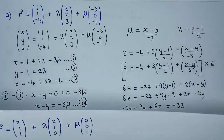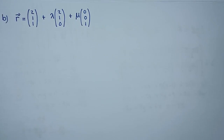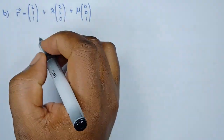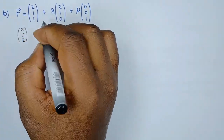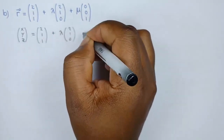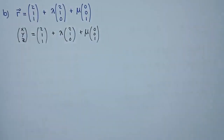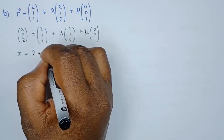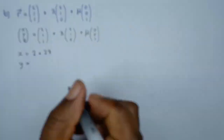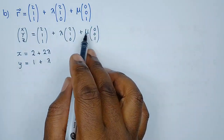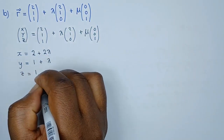For the second question, R can be written as the column vector XYZ, which equals (2, 1, 1) + λ(2, 1, 0) + μ(0, 0, 1). Writing out the parametric equations: X = 2 + 2λ (no mu term), Y = 1 + λ, and Z = 1 + μ (no lambda term).